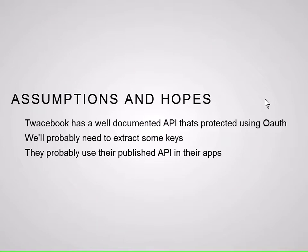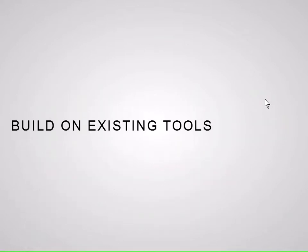The assumptions we're going to work on: Facebook has used this for their app — the same well-documented API used for third-party clients. They probably eat their own dog food. We're going to have to extract some private keys to impersonate the clients. And we're going to build on existing tools as much as possible. A professor I had told me something that stuck: do the dumb thing first, because it works like 90% of the time. Use existing tools and do the dumb thing first.